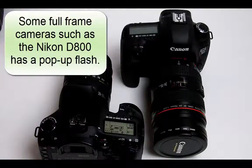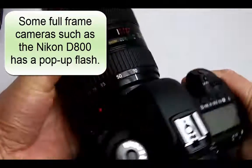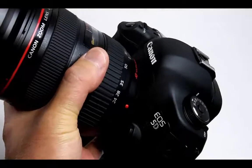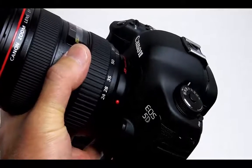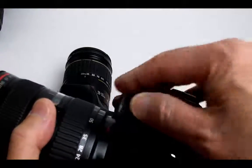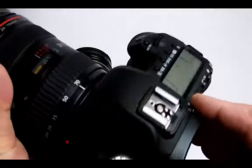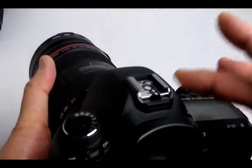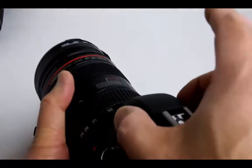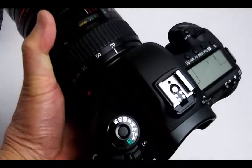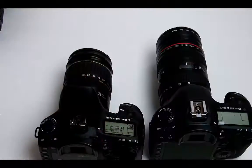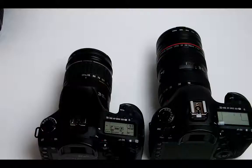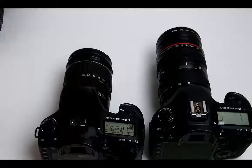Number three: more high-end cameras — being full-frame cameras — do not have built-in pop-up flashes. Here is the Canon 5D Mark III. As you can see, there is the typical hump, but there is no pop-up flash. The pentaprism is located in that raised area.